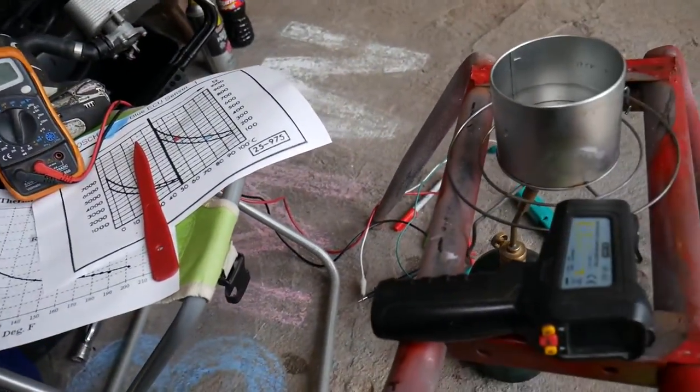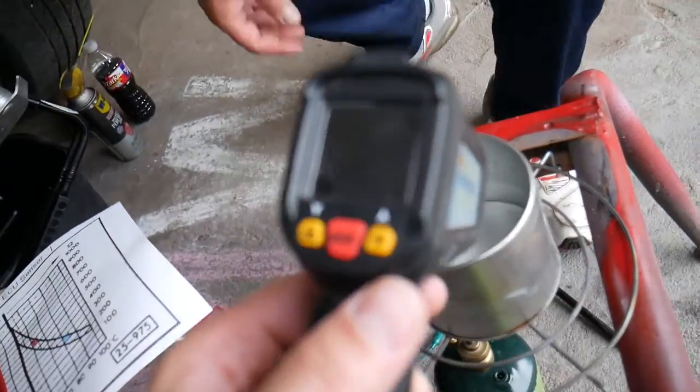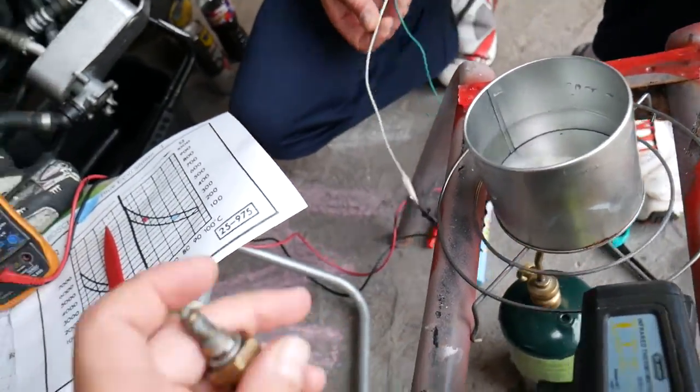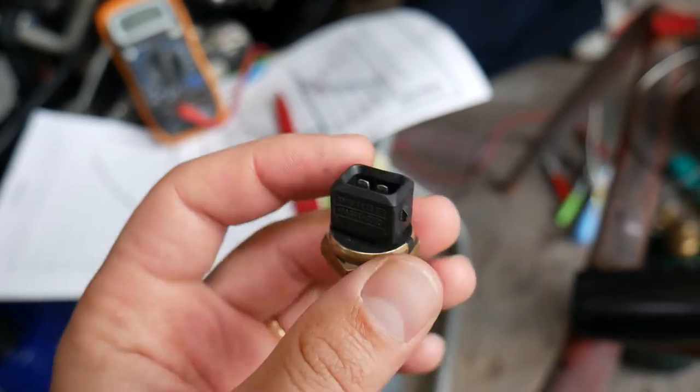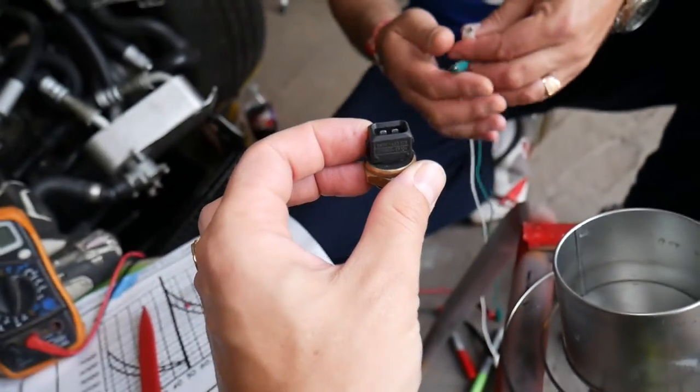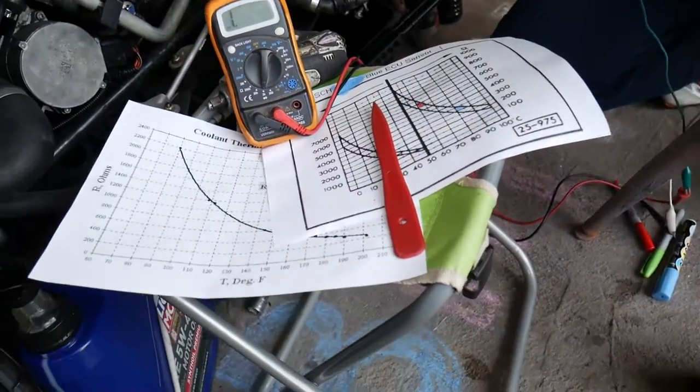Now we have a pot of water here. Right here, this is the sensor. On the sensor we have two wires and we're going to install alligator clips so we can connect it to the voltmeter. We have the voltmeter set at ohm readings.